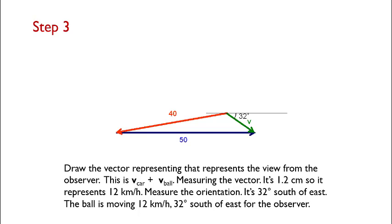If we measure it out with a ruler, we find that it is 1.2 centimeters, and that means it represents 12 kilometers per hour. If we measure its orientation, we find that it is 32 degrees south of east. That means the ball is moving 12 kilometers per hour 32 degrees south of east for our stationary observer, and we have solved the problem.